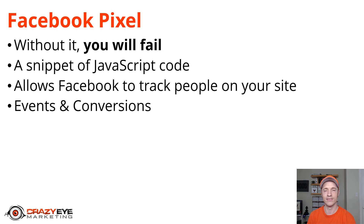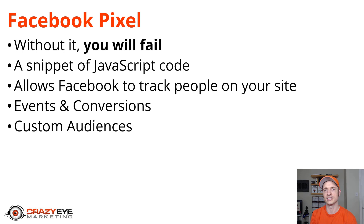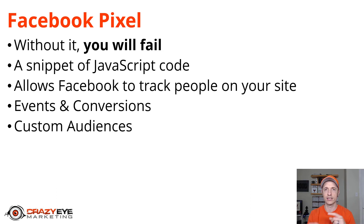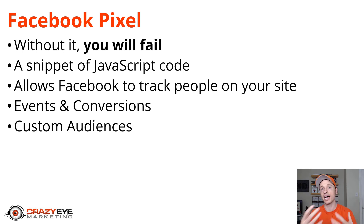The Pixel allows you to track events and conversions — things like leads, purchases, add-to-cart, clicks, et cetera. It also allows you to create custom audiences: people that have landed on your website, or people that have purchased products. You can create an audience of buyers, or an audience of people that have opted in — a leads audience. Then you can retarget those people, putting ads in front of people that have already taken certain actions. You can advertise to your leads to get them to buy, or advertise to buyers to get them to upgrade or buy something else.